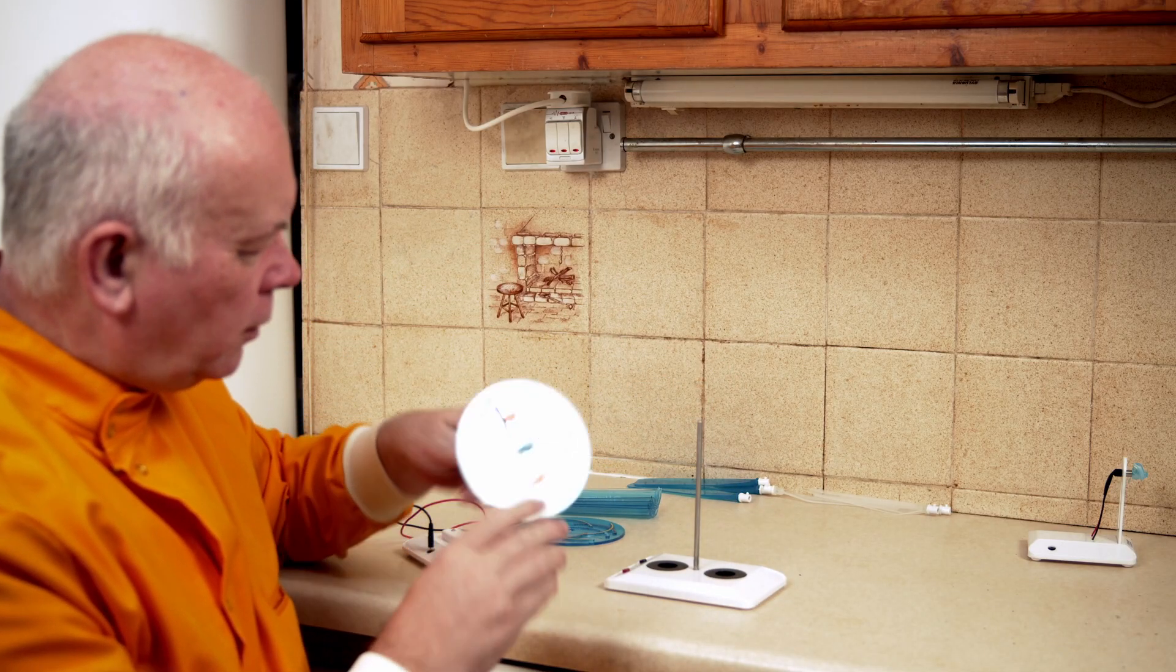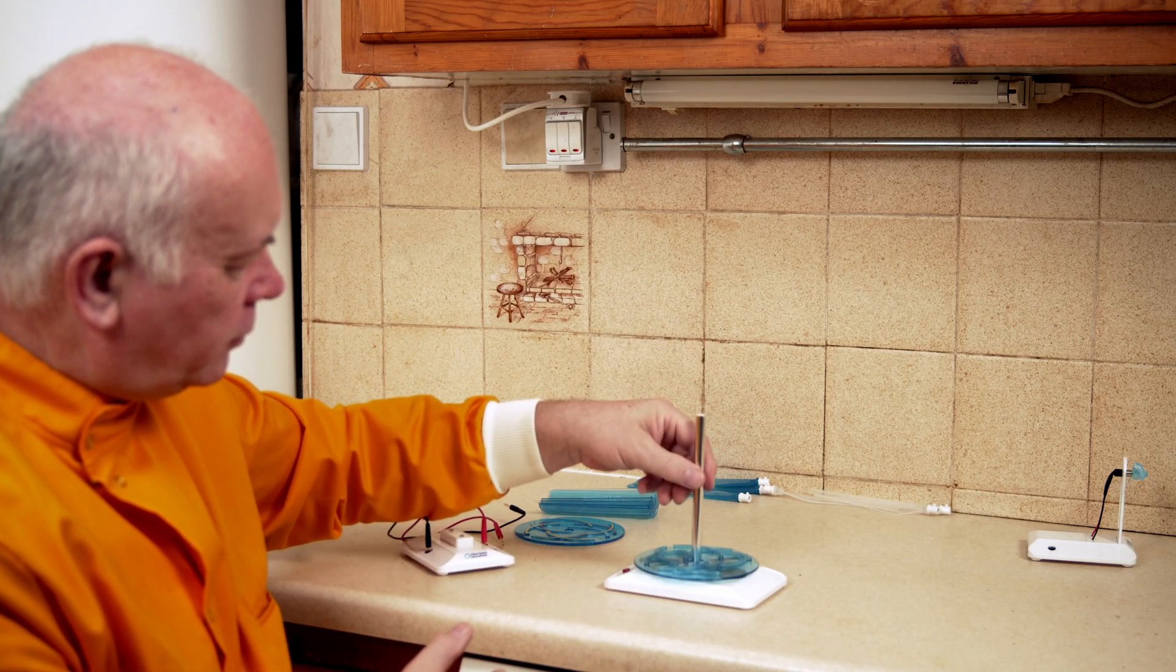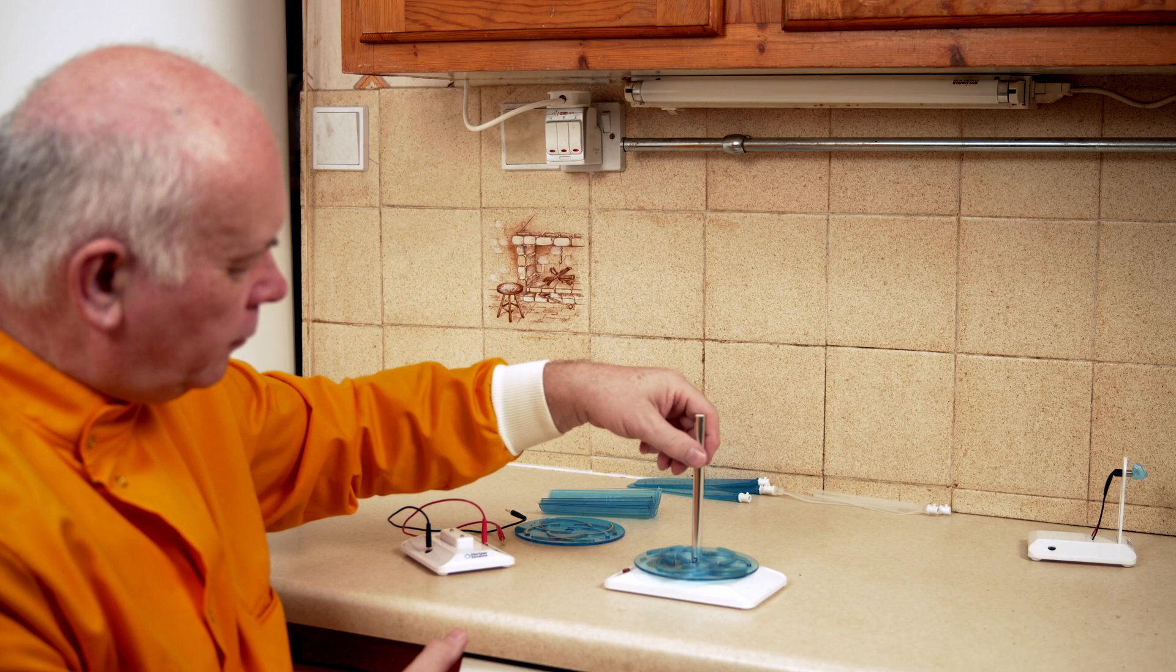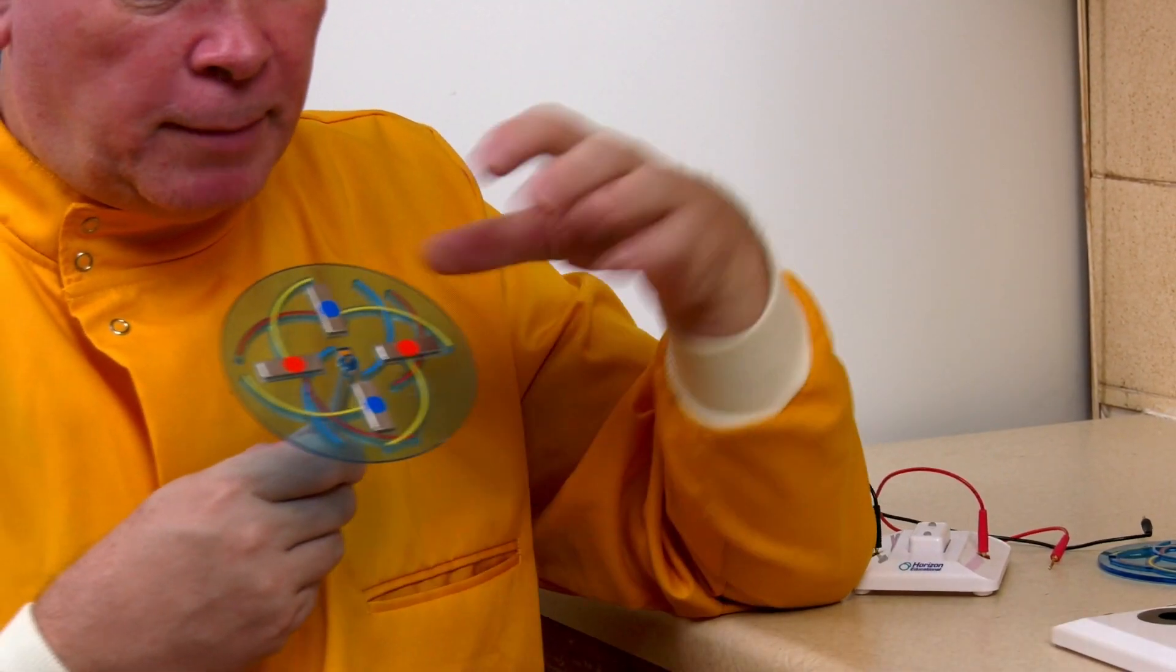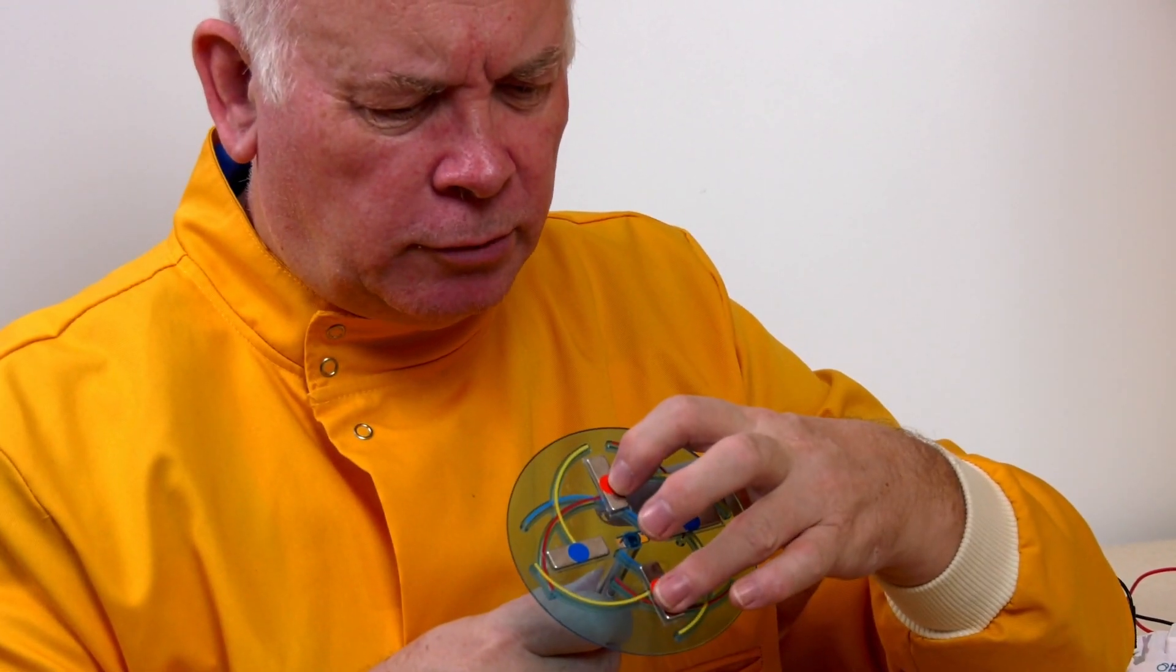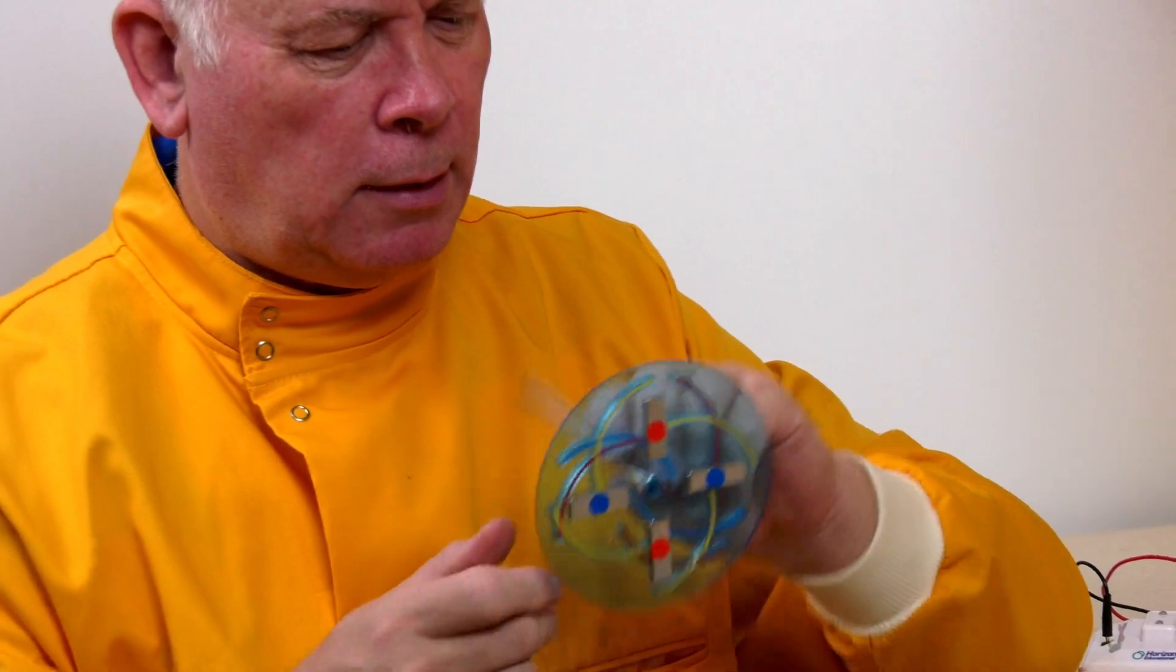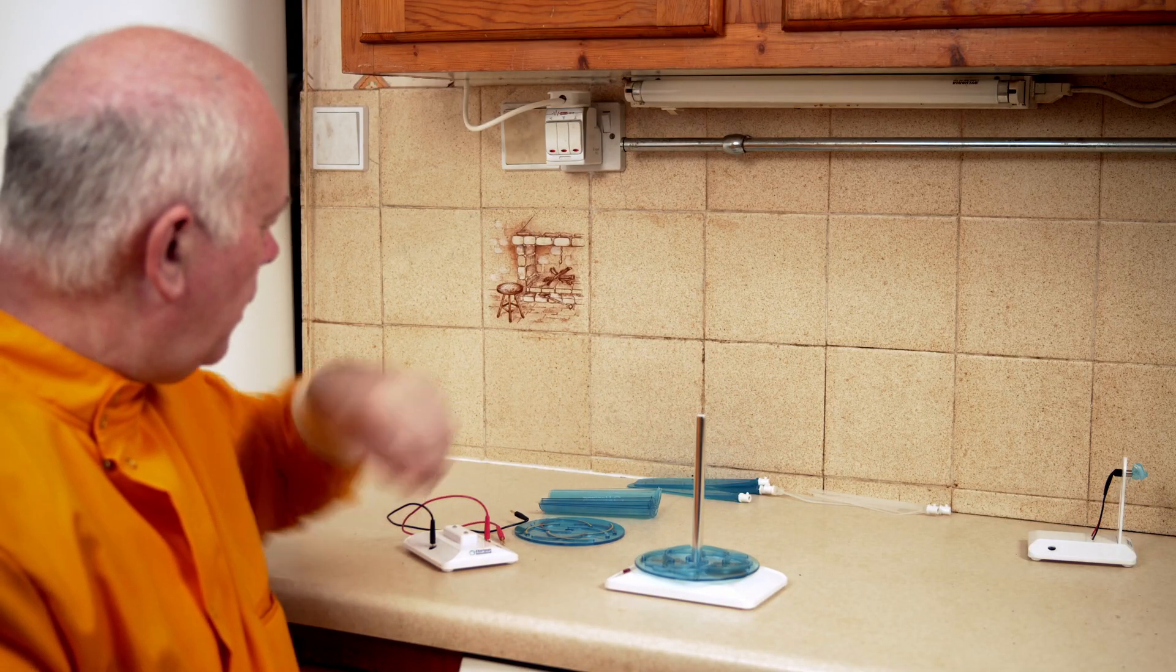We've got a vertical shaft that will rest on that pole and allow it to spin. At the bottom we've got two sets of magnets, two north magnets and two south magnets, and they are 90 degrees apart from one another.